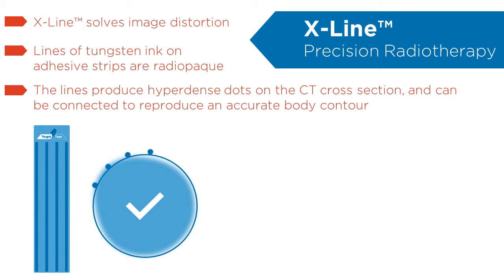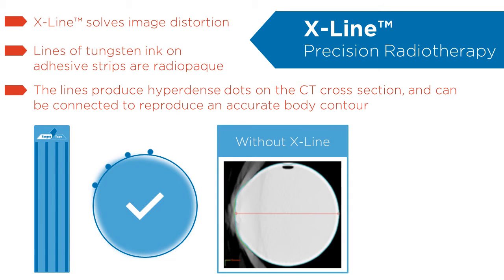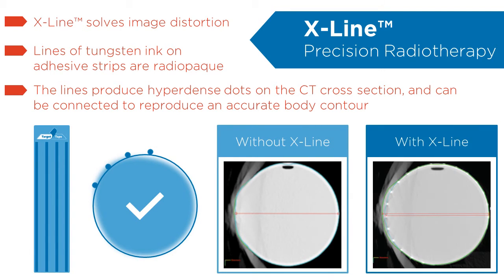Without X-Line, the cylindrical phantom appears distorted. However, with X-Line applied to the surface of the phantom, the true body contour can be reconstructed by connecting just underneath the bright, hyper-dense dots. By connecting underneath the dots, the true skin contour is identified, which avoids including these dots in the radiation planning.